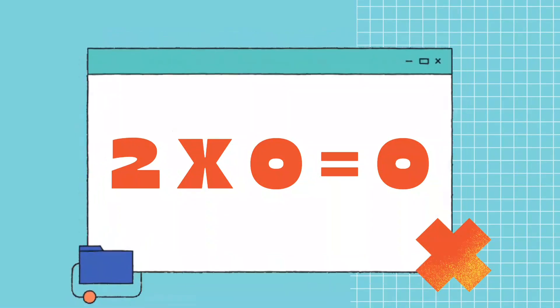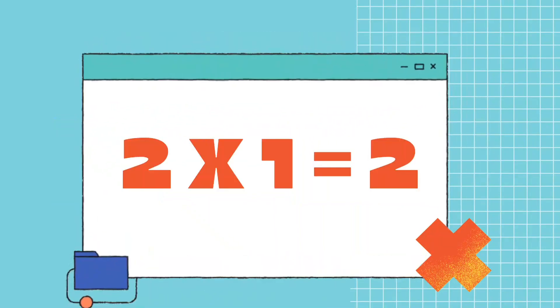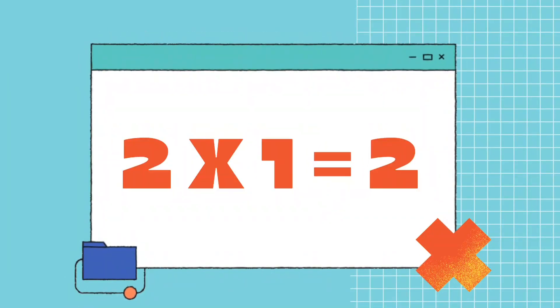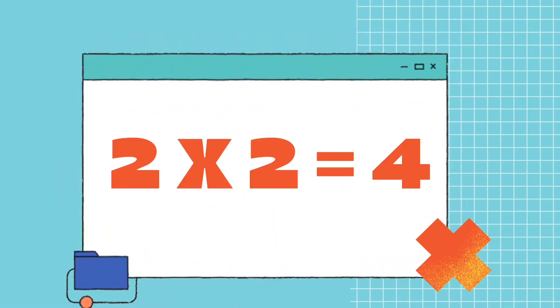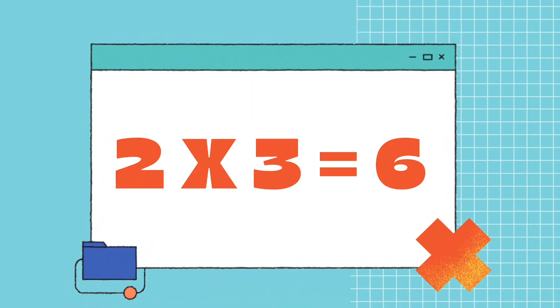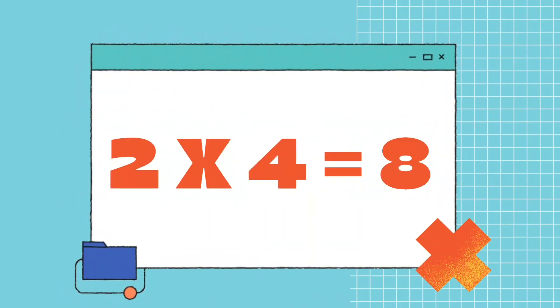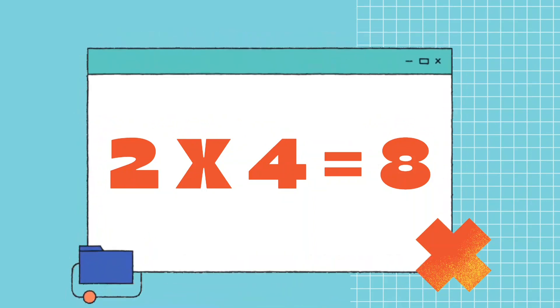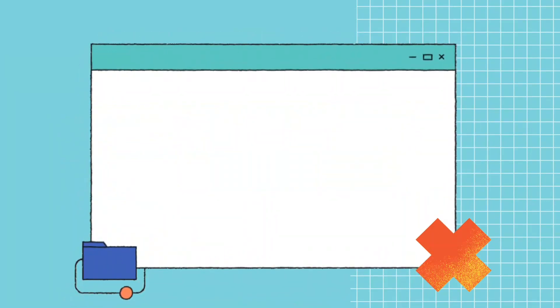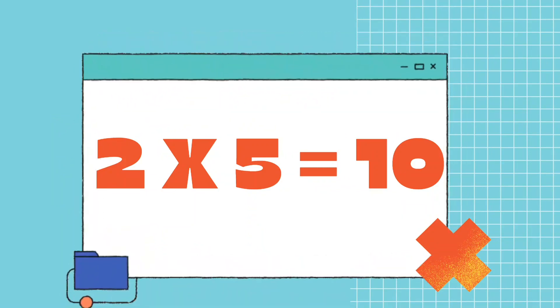2 times 0 equals 0. 2 times 1 equals 2. 2 times 2 equals 4. 2 times 3 equals 6. 2 times 4 equals 8. 2 times 5 equals 10.